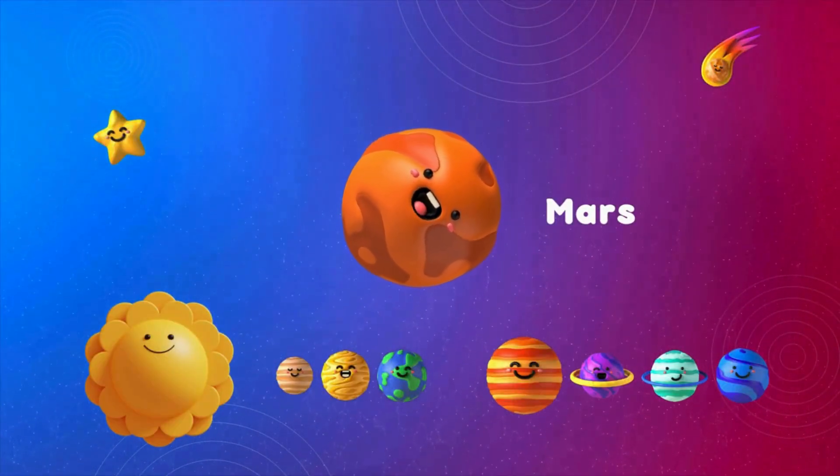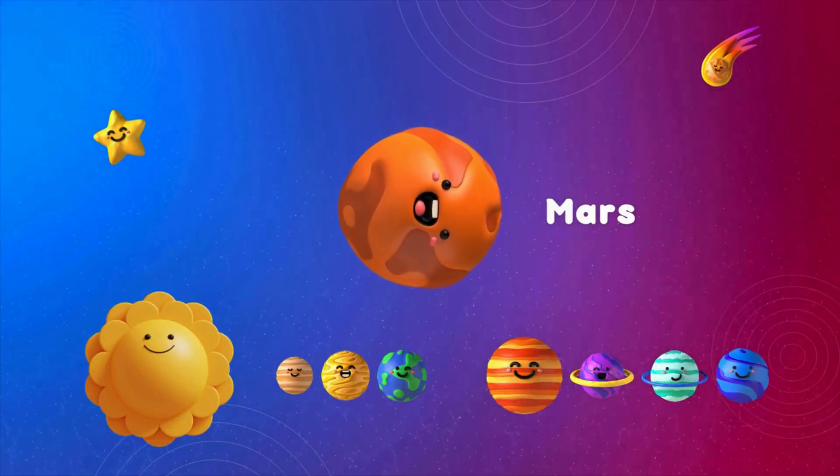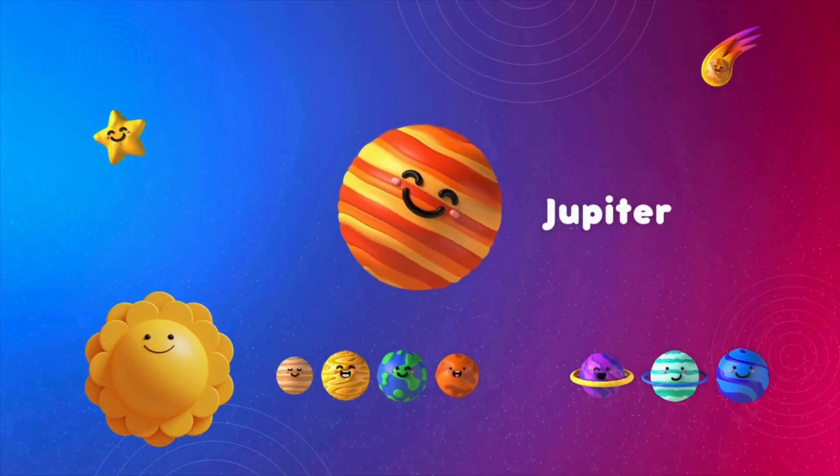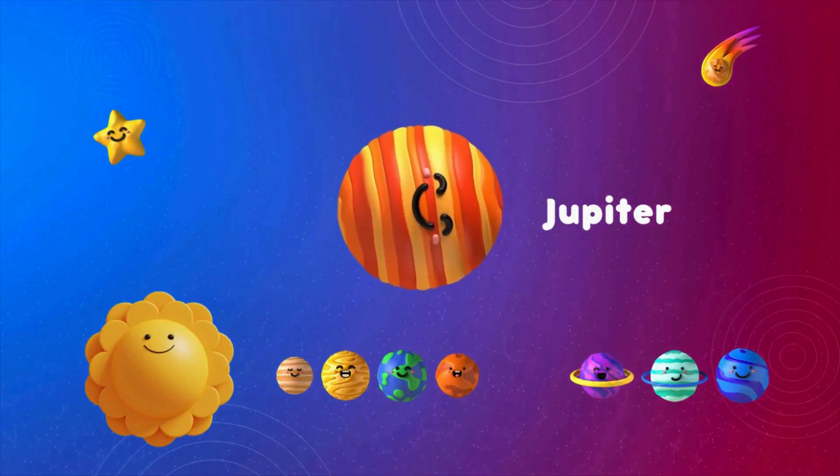Mars, the red planet. The fourth place in the solar system. Jupiter, the largest planet. The fifth place is the best.